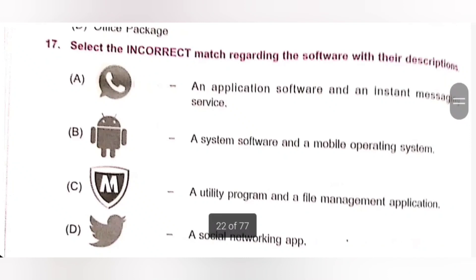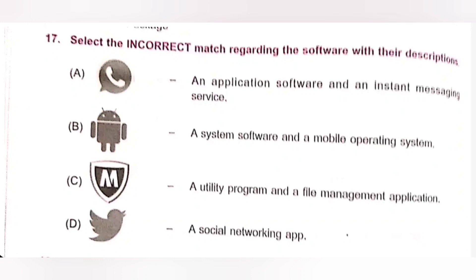17. Select the incorrect match regarding software with its description. A. WhatsApp — application software and instant messaging service: correct match. B. Android operating system — system software and mobile operating system: correct match. C. McAfee — utility program and file management application: incorrect match, because McAfee is a utility software, not a file management application. D. Twitter — social networking app: correct match. Option C is the incorrect match and therefore the correct answer.